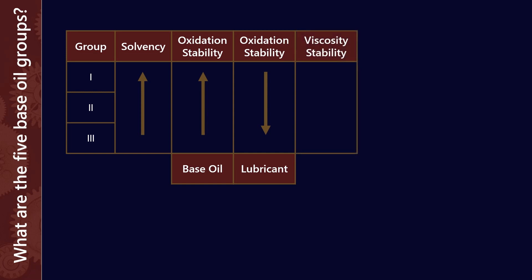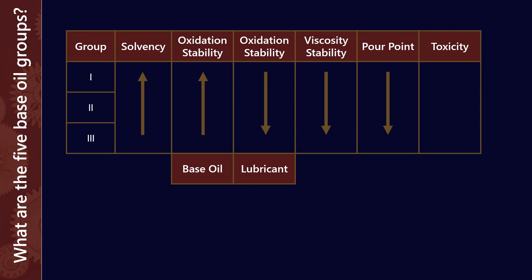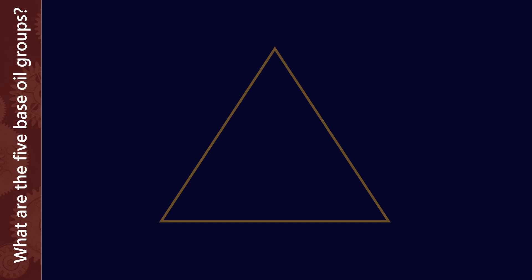We've also got the viscosity stability, that is the viscosity index. We know that group 3s have higher VIs than group 1s. And that's also related to the pour point as well. Finally, we've got toxicity. Now, it's the aromatic compounds with their benzene rings which are the most toxic components of a crude oil. So we generally remove these as part of the refining process. And therefore, group 3s are lower in toxicity than group 1s are.